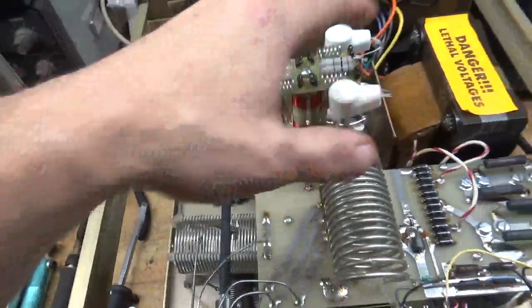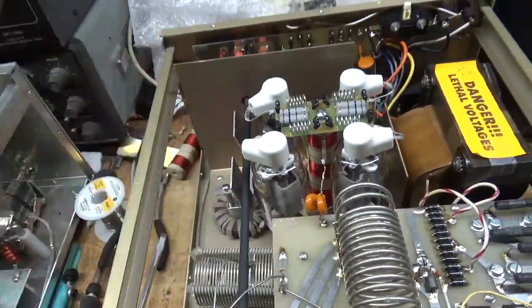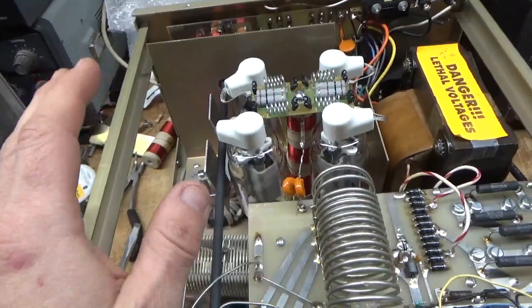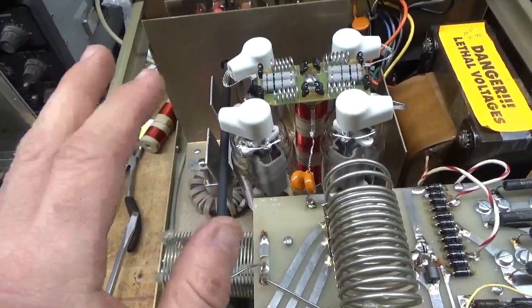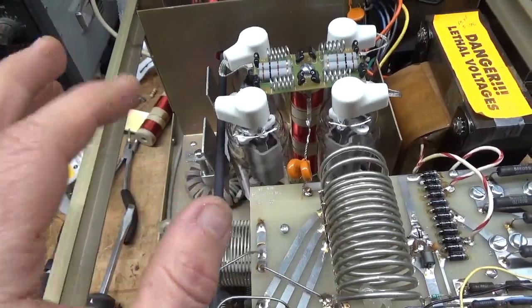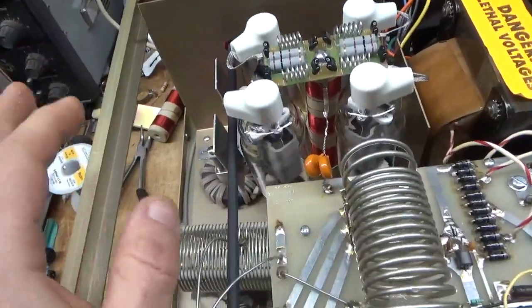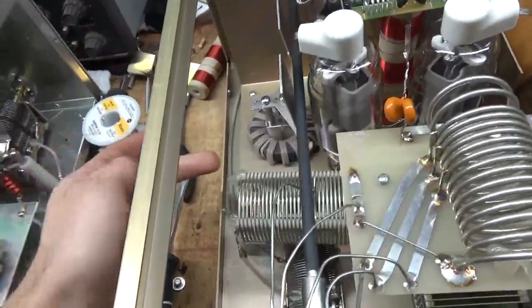I took this whole assembly out. It had the grids lifted above ground with 50-ohm resistors. Two of them were non-inductive carbon composition type. The other two were wire-wound type, so the wire-wound ones had failed. Removed those, grounded the grids the right way, directly to the floor, to the metal.